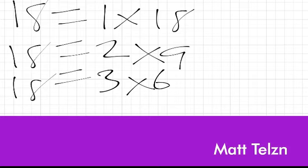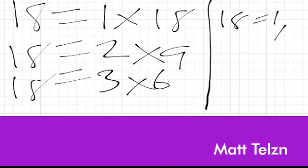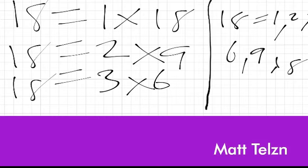Notice that 4 is not a factor of 18 because 4 cannot divide 18 without a remainder. Similarly, 5 is not a factor, 7 is not a factor, and 8 is not a factor. So listing the factors of 18 in order: 1, 2, 3, 6, 9, and 18 itself. These are the factors of 18, using 18 as a case study.